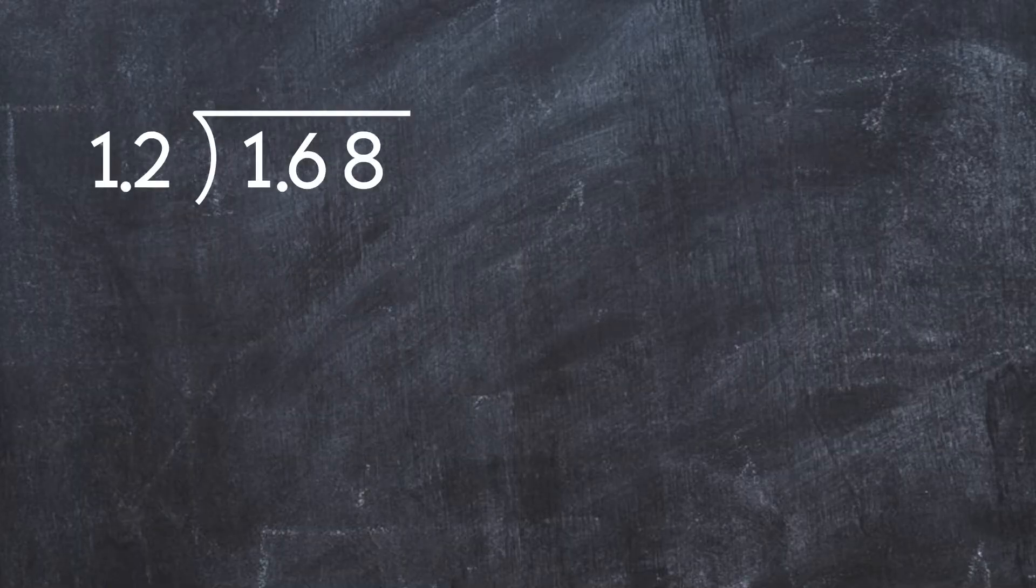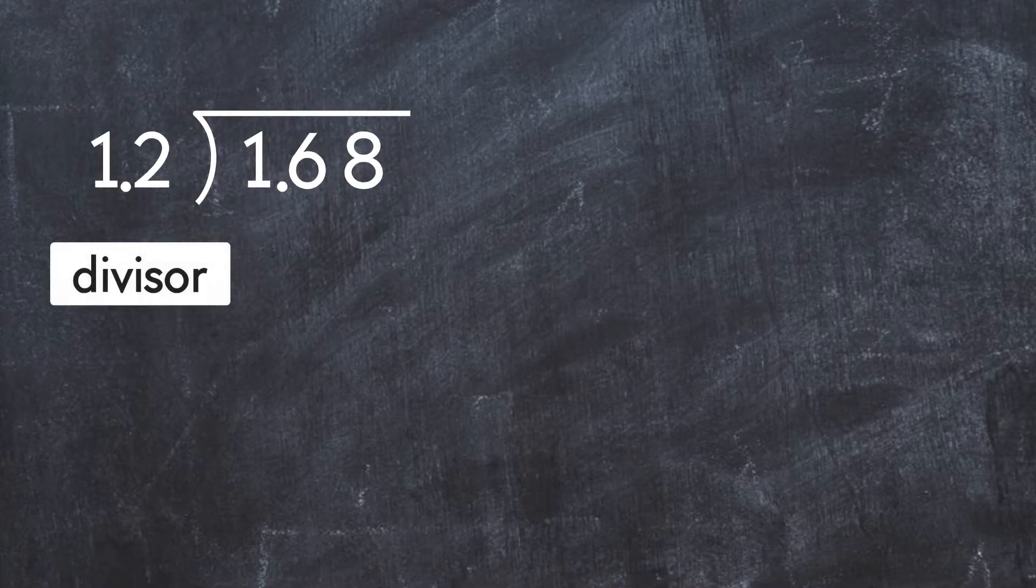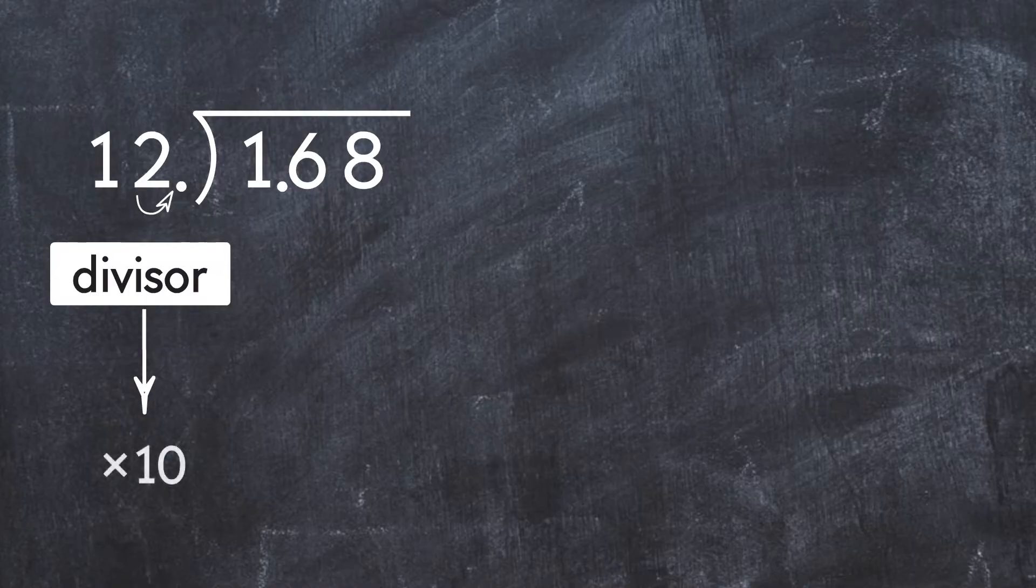Let's try an example. 1.68 divided by 1.2. How do we convert our divisor, 1.2, to a whole number? We multiply by 10. Remember, we also have to multiply the dividend by the same number, 10.